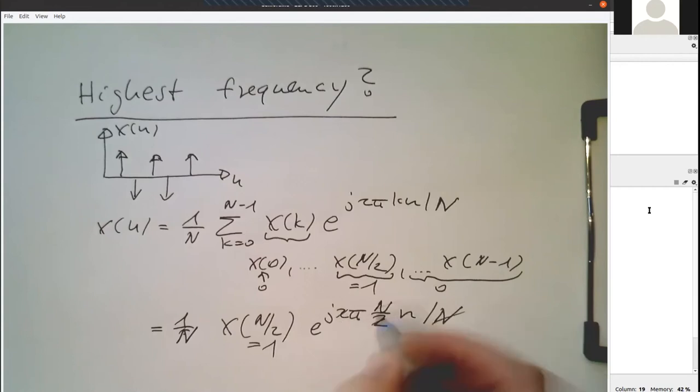The N cancels out here and we are just left with pi n. So if I do this here, one over N, and then we have e to the j pi n, that's all what is left.